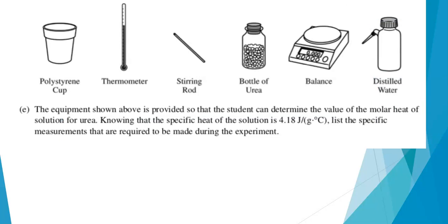The equipment shown above is provided for the student to find the enthalpy of solution for urea. We're given the specific heat of the solution. List the specific measurements that are required to be made during the experiment. You know, if you've done an experiment where you found enthalpy of solution experimentally, you are really having an advantage with this particular question.